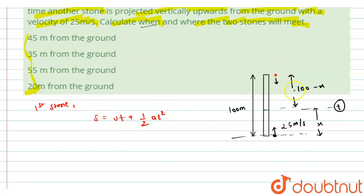So here the s, the displacement of the upper stone is 100 minus x, so this is 100 minus x equals to the initial velocity of this stone is zero because it is dropped, and also we have to take this as negative if I am taking the downward direction